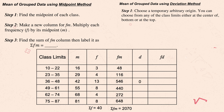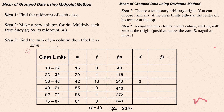For the mean using the deviation method, step one: choose a temporary arbitrary origin. You can choose from any of the class limits — at the center, bottom, or top — using zero as your origin. Step two: assign the class deviations coded values starting with zero at the origin. Positive values go below zero and negative numbers go above. So if zero is placed in the middle, negative one is above, negative two above that, and positive one, two, and three go below.